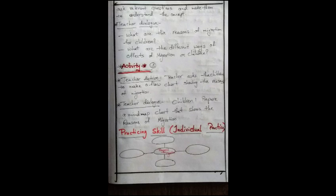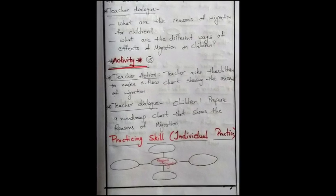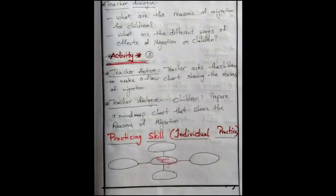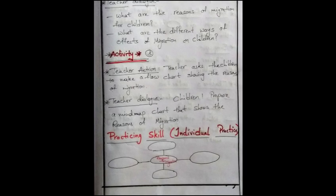Activity 3. Teacher action: teacher asks the children to make a flowchart showing the reasons of migration. Teacher dialogue: children prepare a mind map chart that shows the reasons of migration.